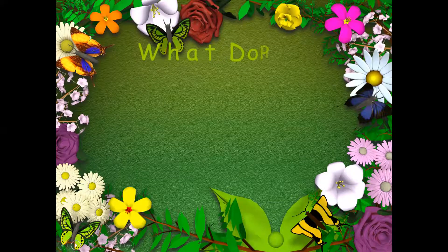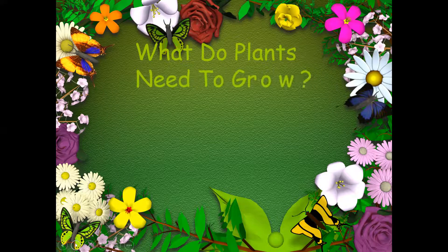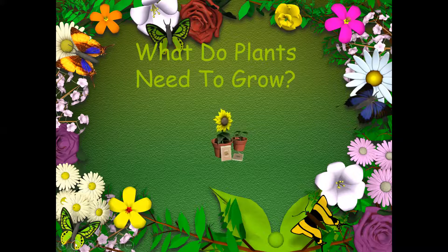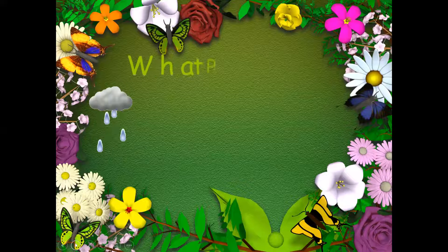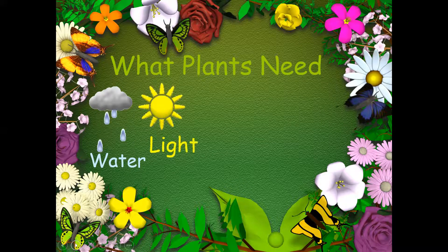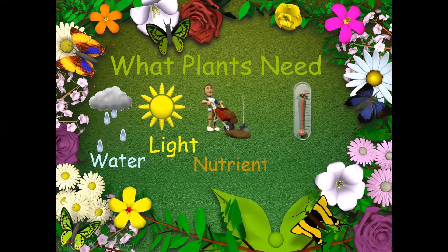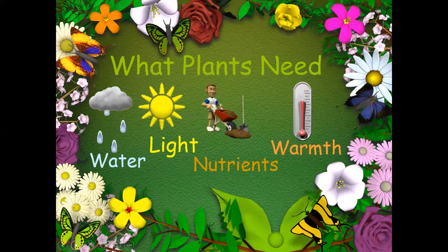Now think: what do plants need to grow? Do you remember? Let's find out together. They need to have water. They need sunlight. They need nutrients, which they get from the soil. And they need warmth — they need to be in the right temperature.